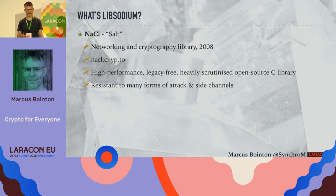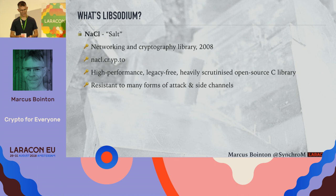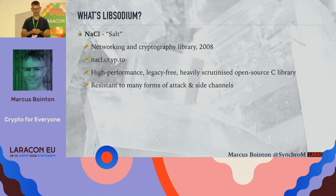So what is Libsodium and where does it come from? It's all based on NaCl — the Networking and Cryptography Library — which dates from 2008 but is still considered state-of-the-art. It focuses on being a high-performance, legacy-free, heavily scrutinized open source C library, resistant to many forms of attack, and very careful to avoid timing side channels. NaCl tries to avoid mistakes that previous cryptography libraries made — it doesn't abstract things much, limits flexibility, and is actually quite a small library. This is a good thing because when you give people choices they don't understand, people make bad decisions.